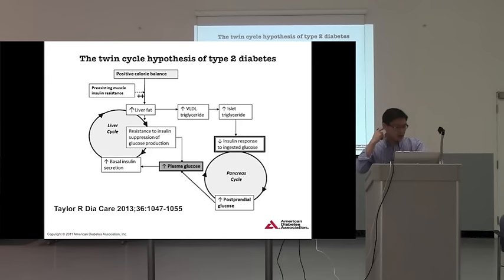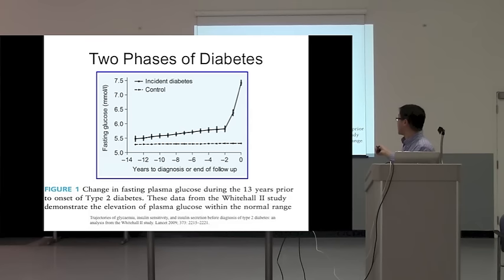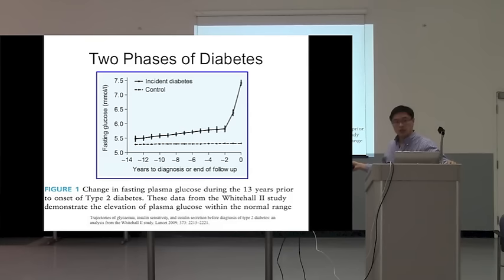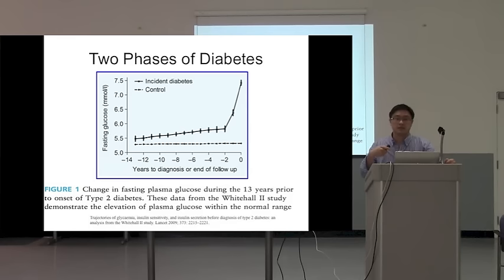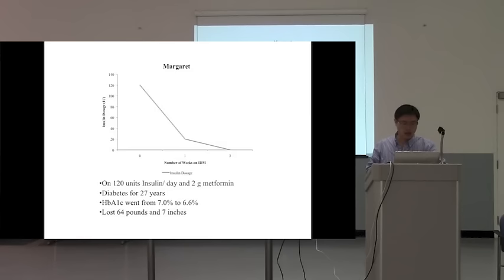It's called the twin cycles hypothesis of type 2 diabetes, published in Diabetes Care by Dr. Taylor in the UK. It's quite complicated, so we'll go through it slowly. What you have to understand is that there are actually two phases of type 2 diabetes. Looking back from the time of diagnosis, there's first a slow rise in blood sugars corresponding to increasing insulin resistance, and then just before diagnosis, a very sudden spike reflecting beta cell dysfunction — where the pancreas can't produce quite enough insulin and blood sugars really spike up.